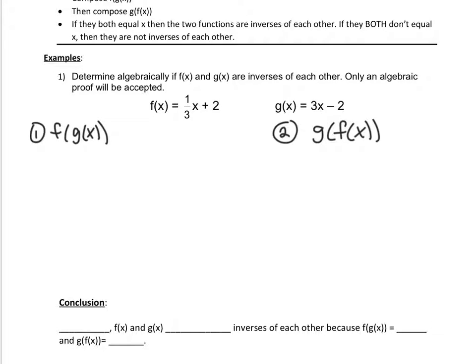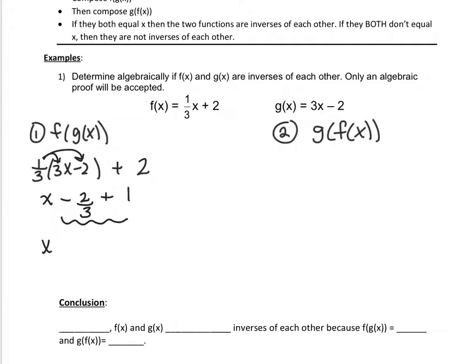For the first one, f of g of x means that I'm going to throw this function in for x. So we have one-third x plus two — we're going to put in the 3x minus two. And now we're going to distribute this one-third in to simplify it. So this will give you x minus two-thirds plus one. These are my like terms — it's four-thirds.